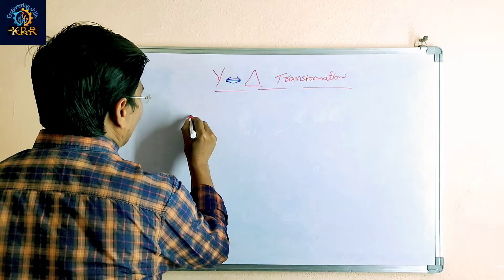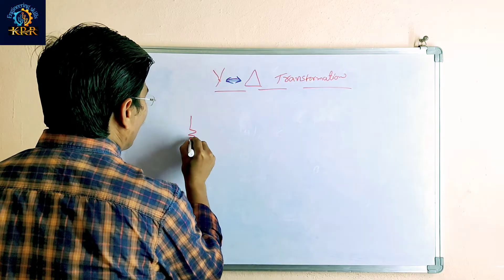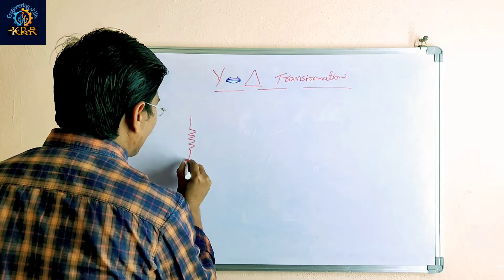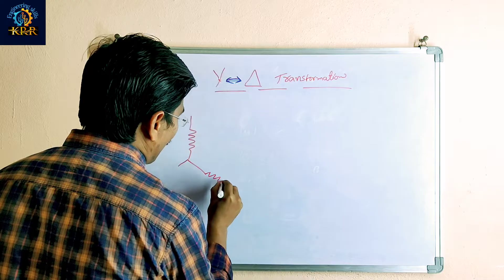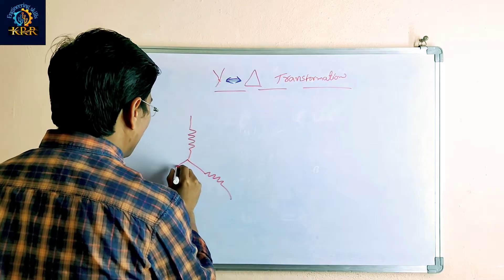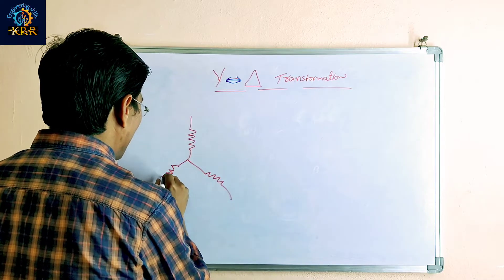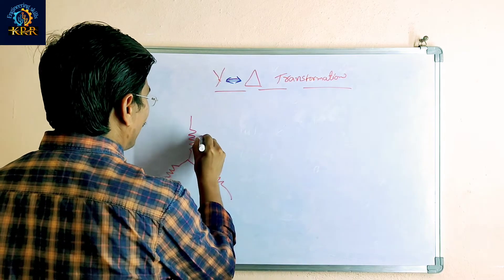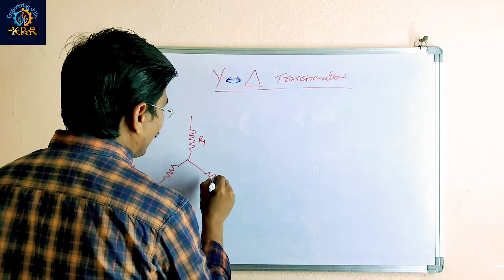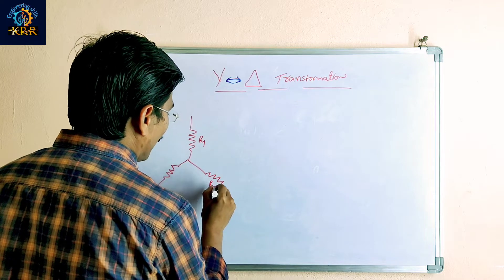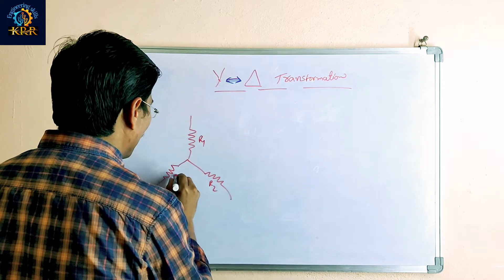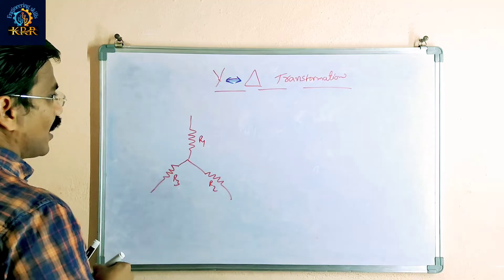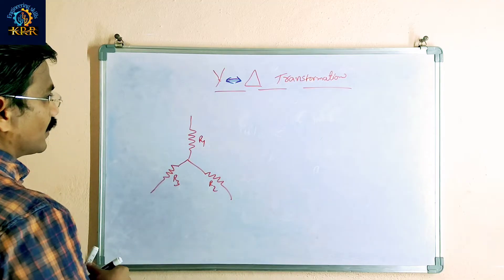This is the star configuration, with R1, R2, R3 labeled on the three branches.